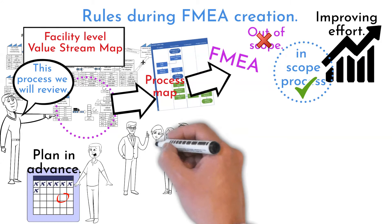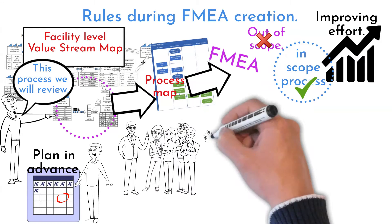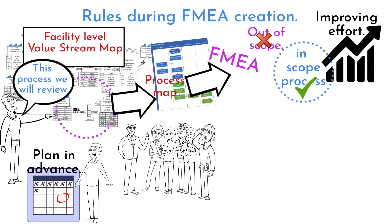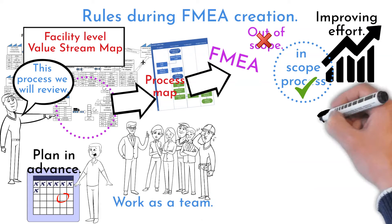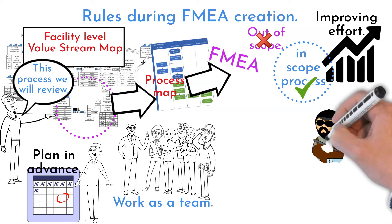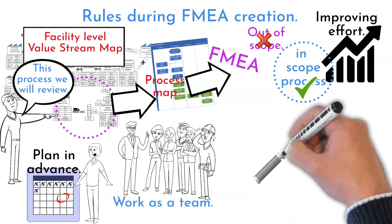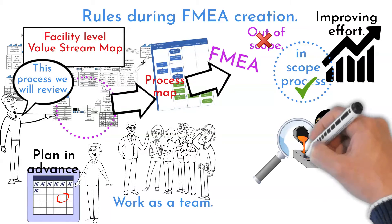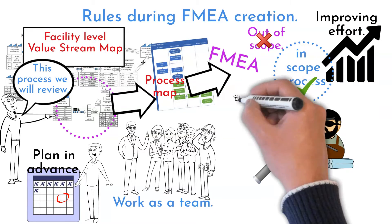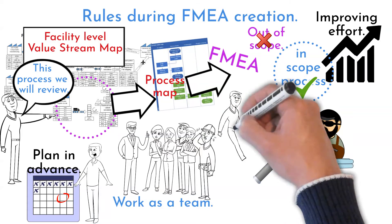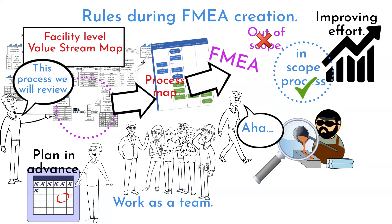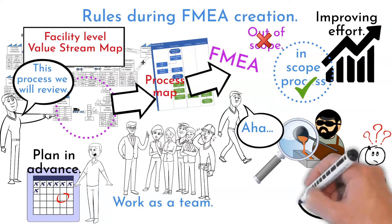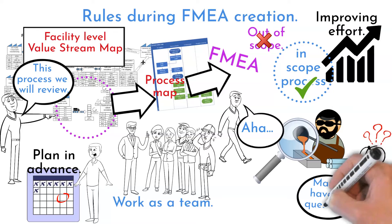Work as a team. Invite at least one person from the assessed process, as well as colleagues from different departments. Visit and observe the assessed process. Walking to see is key to revealing possible failures. Do not hesitate to ask questions while observing.